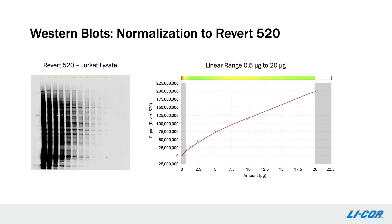This slide shows the same Jurkat lysate dilution, this time stained with REVERT-520. Looking at the relationship between the amount of protein loaded and the signal detected, we can see that within the system, REVERT-520 has similar linearity to REVERT-700. Using the 520 channel for normalization opens up the 700 channel, which is generally a more sensitive channel, to target detection in a three-color western blot.